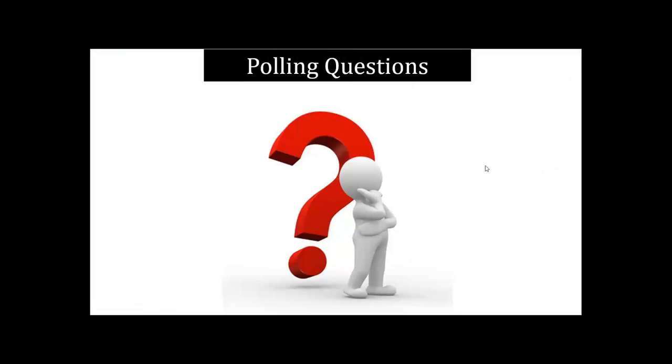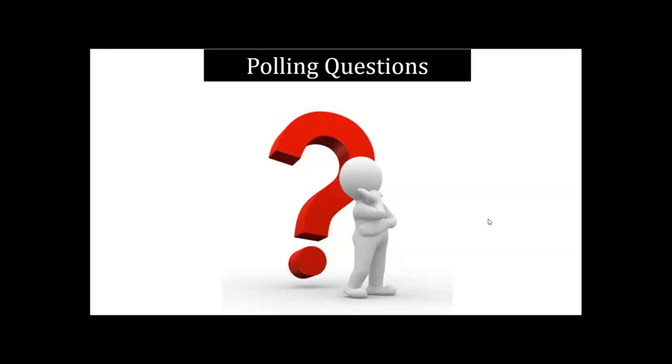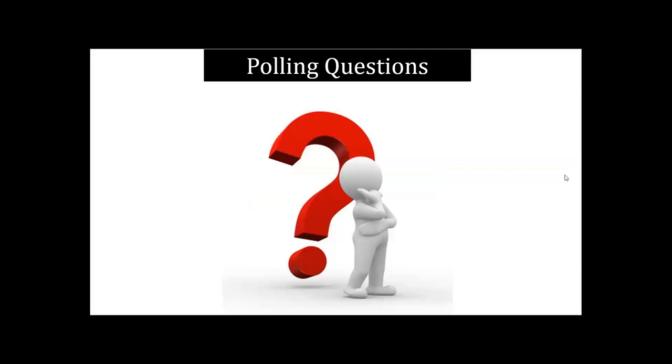We always like to know who's joining us today. Are you a parent or a family member, an individual with a disability, an education professional, a human service provider, or other? Sometimes you are a parent and also a professional, so select whichever role you're joining us in today. The poll results show 50% are parents and family members, and the other 50% are human service providers. Thank you so much for sharing that.